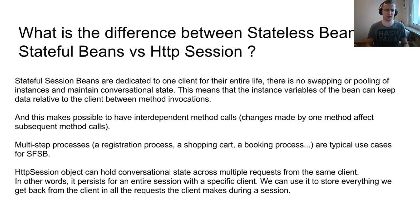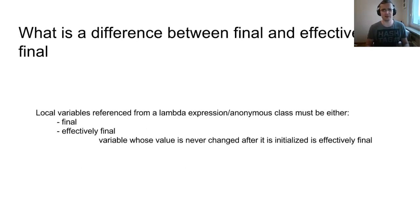HTTP session object can hold conversational state across multiple requests from the same client. In other words, it persists for an entire session with a specific client. We can use it to store everything we get back from the client in all the requests the client makes during the session. What is the difference between final and effectively final? The local variable referenced from a lambda expression must be either final or effectively final. This second one means that the variable never actually had the keyword final at the definition, but the variable is never changed after it is initialized. So it means it's effectively final. That's it. Thank you.